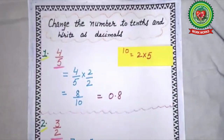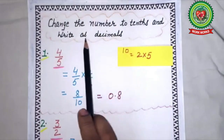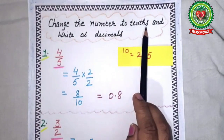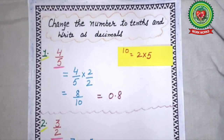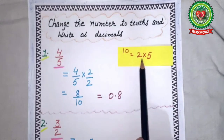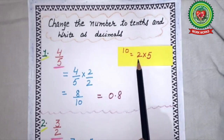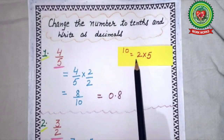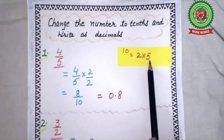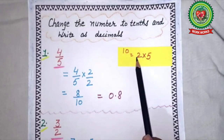That is, change the number to tenths and write as a decimal number. Tenths means the denominator should be 10. First we will find factors of 10: 2 × 5 = 10. So if the denominator is 2, we multiply it by 5; if the denominator is 5, we multiply it by 2.